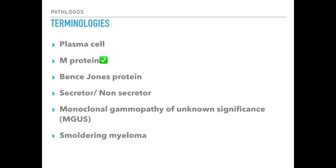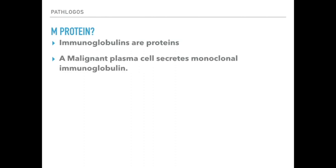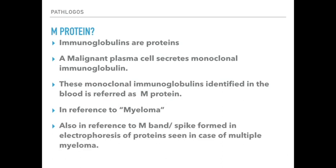The next term we'll discuss is M-Protein. A malignant plasma cell secretes a monoclonal immunoglobulin, and these monoclonal immunoglobulins identified in the blood are referred to as M-Protein — M for myeloma. They are also called M-Protein in reference to the M-band or spike formed in electrophoresis of proteins seen in cases of multiple myeloma.